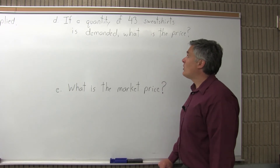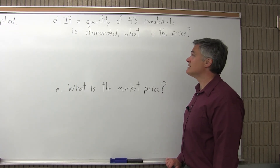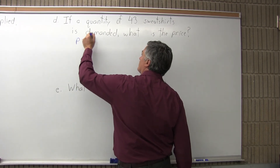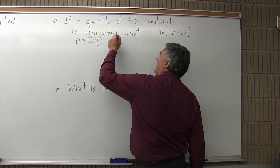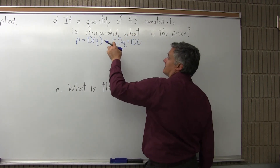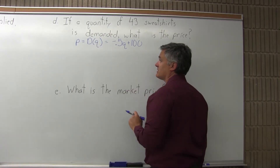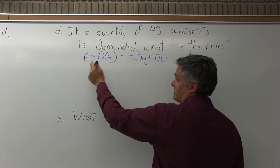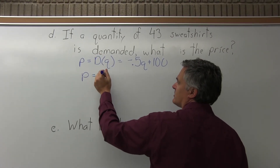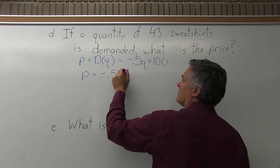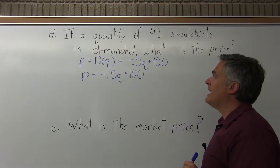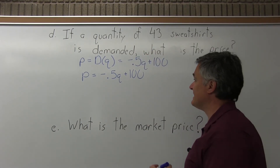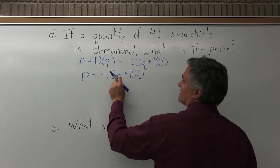Part D says: if a quantity of 43 sweatshirts is demanded, what is the price? Because this asks about demand, I start with the demand equation, which is P equals D(Q) equals negative .5Q plus 100. The D(Q) is just to identify this as the demand equation as opposed to supply. Once I have the correct equation, I write P equals negative .5Q plus 100. The 43 that's given is a quantity — it says 'if a quantity of 43 is demanded' — so find the price.